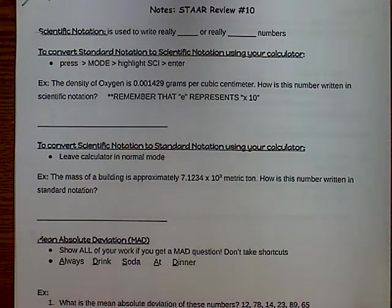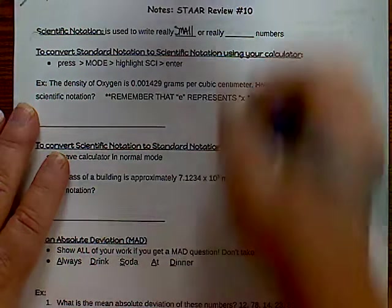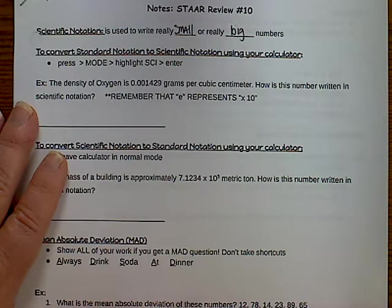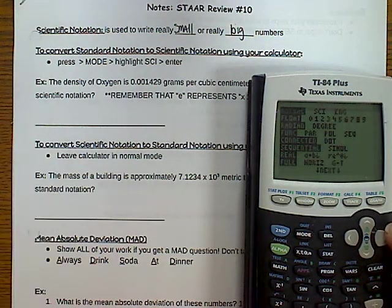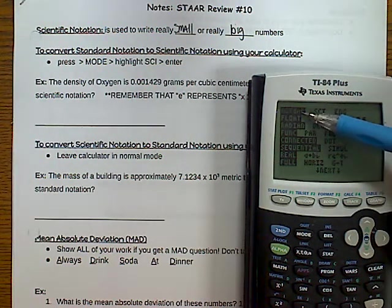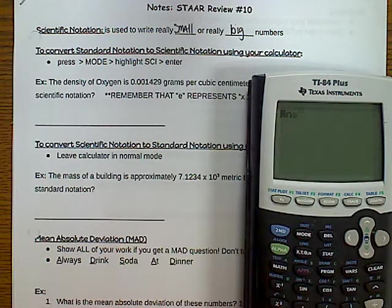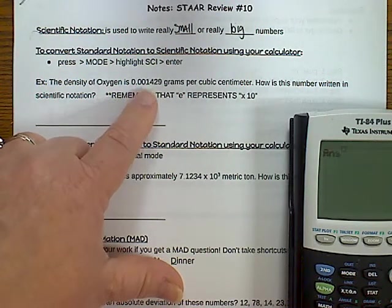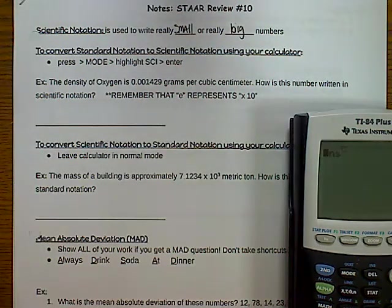I'm just resetting my calculator. So scientific notation is used to write really small numbers or really big numbers. To convert standard notation to scientific notation using your calculator, you press mode. Hopefully all of you are very proficient at this by now. Right now it's flashing on normal. We need it to flash on scientific. We're gonna hit enter so it'll stick. Hit second and quit. And now we're going to do the example.